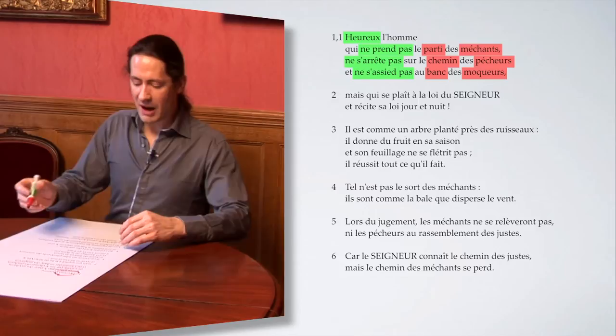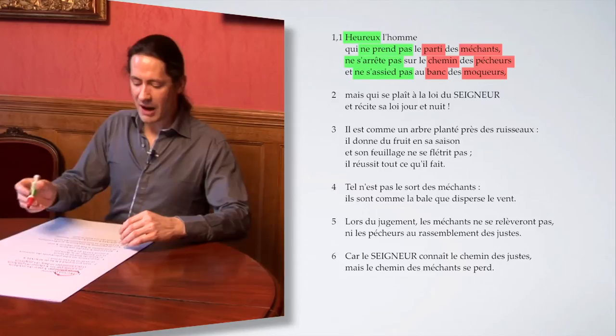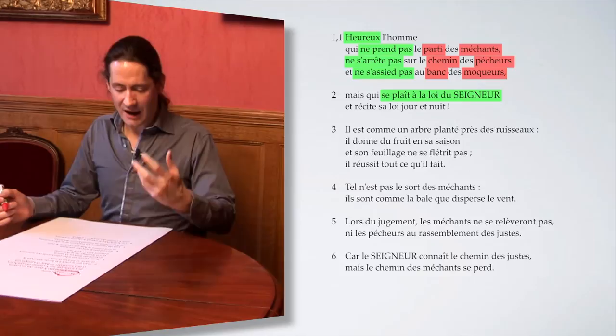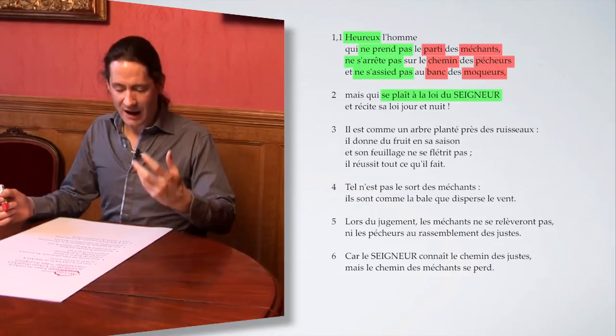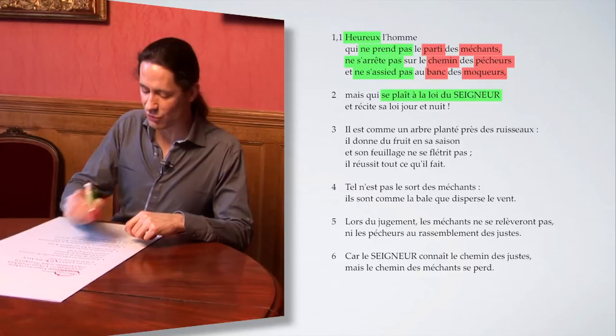Ces termes négatifs sont contrastés au verset 2 par le plaisir auquel l'homme est encouragé, l'homme qui se plaît à la loi du Seigneur. Et ça, c'est la deuxième face de cette clé du bonheur. Un mot important apparaît à deux reprises dans ce verset : la loi. Il se plaît à la loi du Seigneur, il récite sa loi jour et nuit.